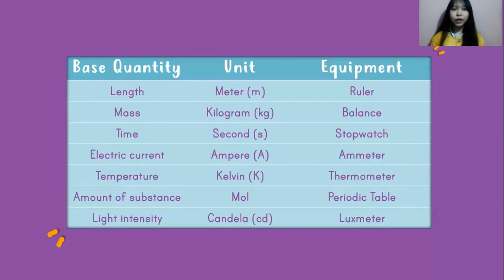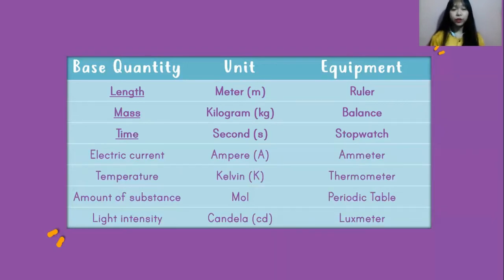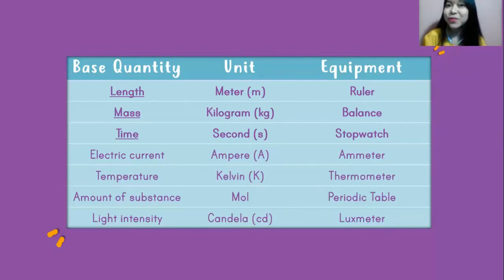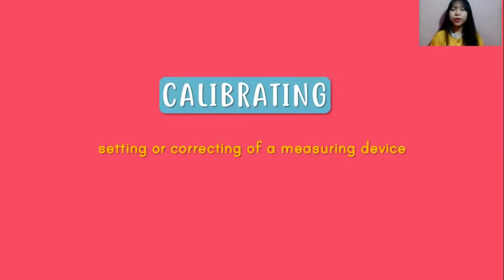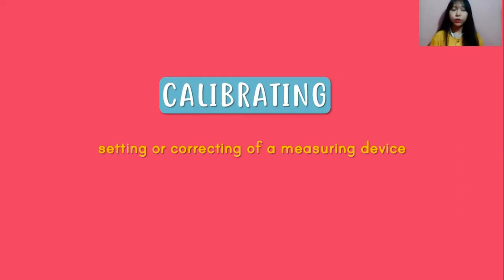For today, we're going to learn three out of the seven base quantities: length, mass, and time. You know that we have special equipment to measure a certain quantity, right? But before we use the equipment, we need to consider several things. The first one is calibrating — basically, calibrating is a setting or correcting of a measuring device. We usually do it by adjusting it to match a dependable, known, and accurate measurement. For example, we're going to calibrate a thermometer that we'll use in our lab work, and we can calibrate it with a thermometer that is usually used at the room temperature of the lab.